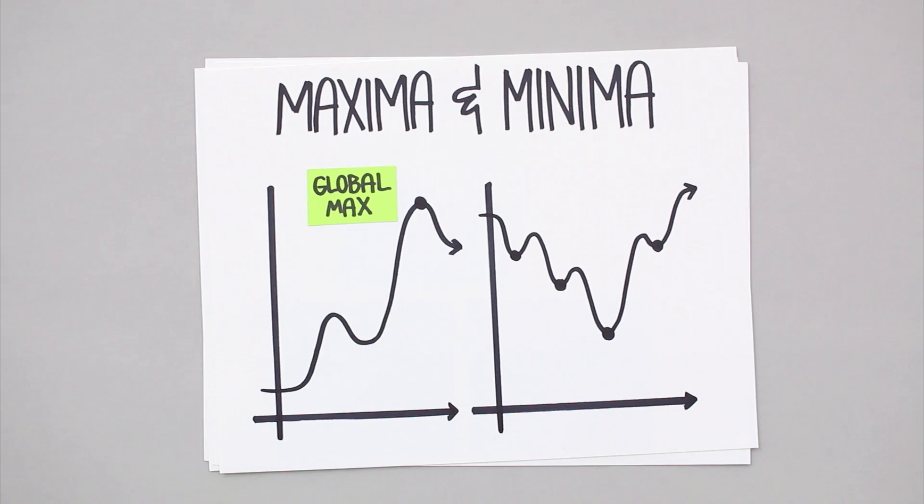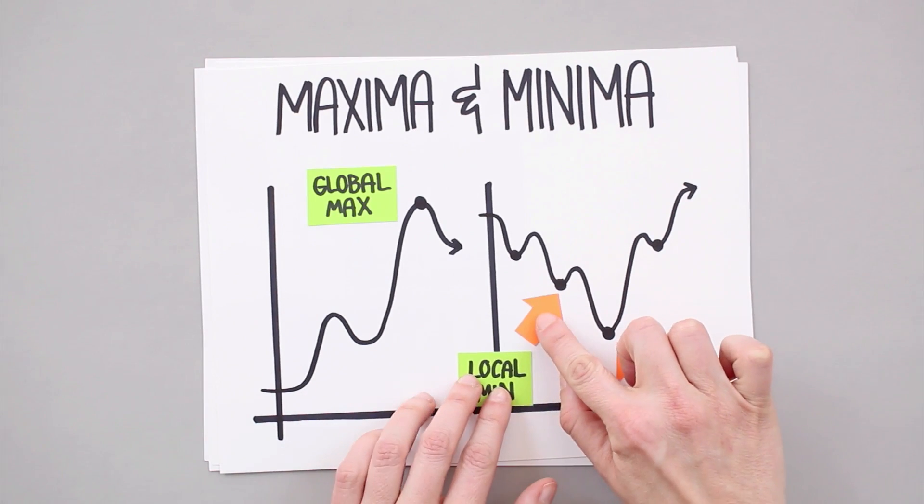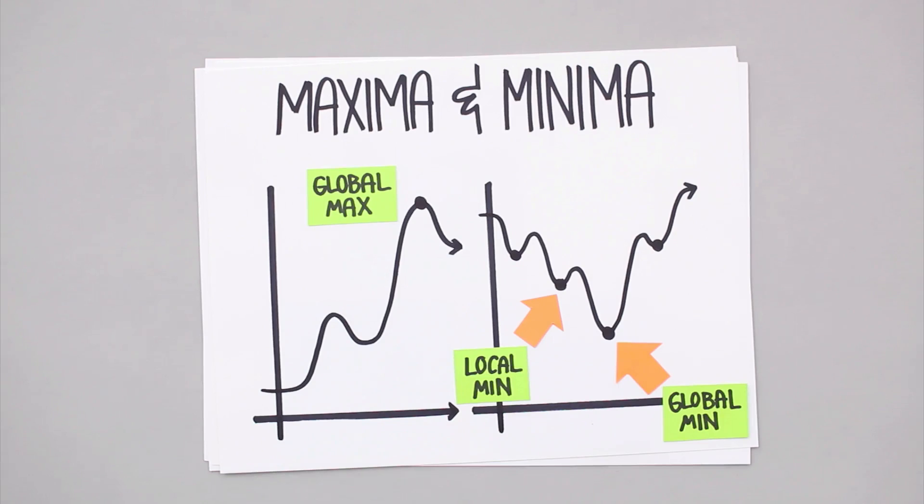On this graph, for example, we have several local minimums and maximums, but only one global minimum. This is the global minimum because it's the lowest value the function ever attains, and this is a local minimum because it's the lowest value this function attains in this particular area of the graph.